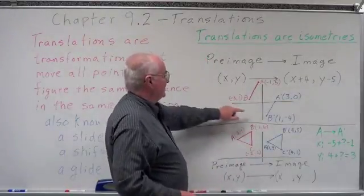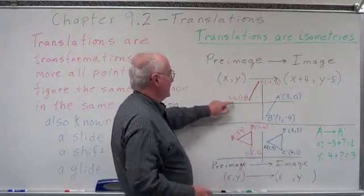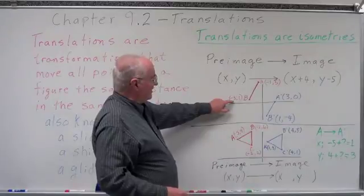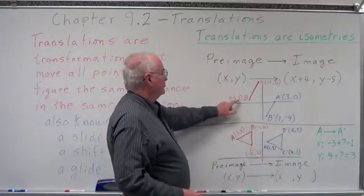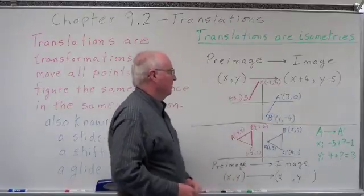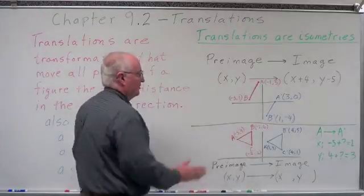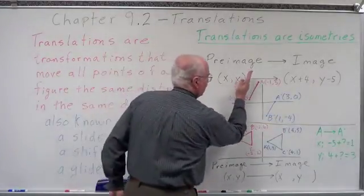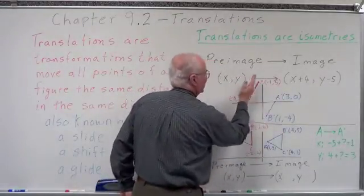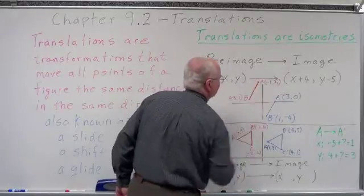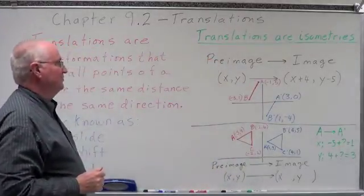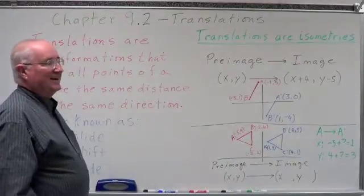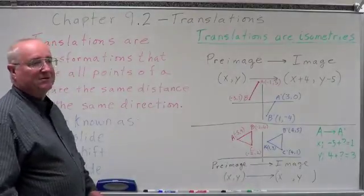For point B: adding 4 to −3 gives us 1, and subtracting 5 from 1 gives us negative 4. So B prime is (1, −4). We've simply moved all the points the same distance in the same direction — to the right 4 and down 5.